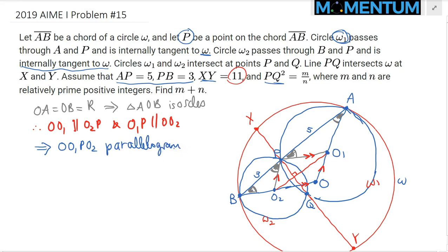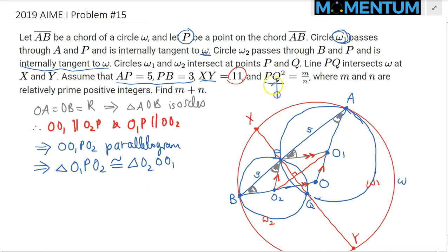Like in any parallelogram, the diagonal O1O2 splits it into two congruent triangles. This implies triangle O1P O2 is congruent to triangle O2O1 O. So far we've related point P to O1, O2, A, and B, but we have no information about point Q yet — so it's the right moment to introduce Q.